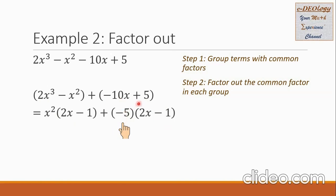If I pull out negative 5, what remains is 2x minus 1. Before going further, I must check that the factors are correct. Negative 5 multiplied by 2x gives negative 10x. The negative 5 times negative 1 is positive 5. So these factors are correct for the second group.